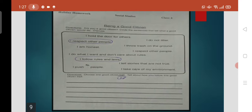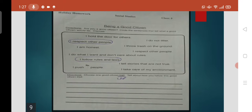For example, I respect other people. We respect others and that is a good trait. I follow rules and laws. Being a good citizen, I follow the rules and regulations. There are many other statements here. You have to circle them.